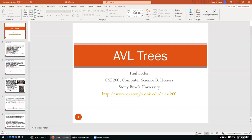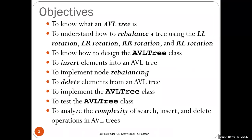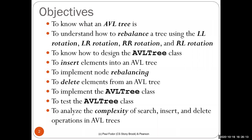We'll continue with the same data structure we created last time for binary search trees, but implement more efficient binary search trees. We'll learn what an AVL tree is, understand what it means to rebalance a tree, and the four different ways to do it: left-left, left-right rotation, and so on. We'll implement it as a subclass of BST with an inner class for AVL nodes.